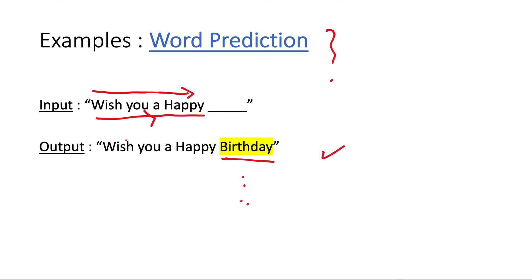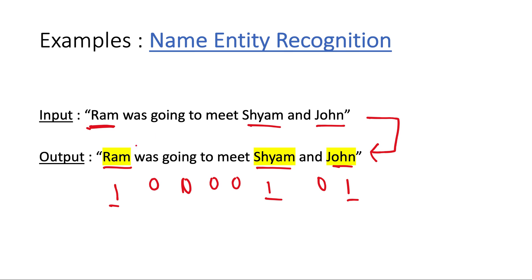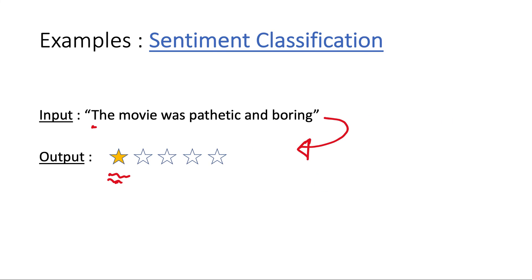In each of these cases, you see there is some sequence associated with different data. You can have a one-to-one relationship. In the named entity example, the input had five words and the output had five labels, so there is one-to-one mapping. In sentiment classification, there is a many-to-one relationship.